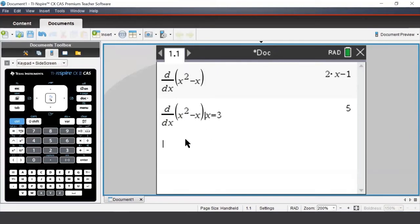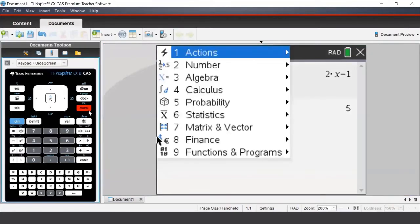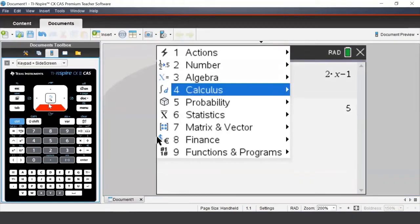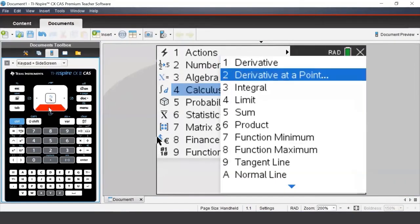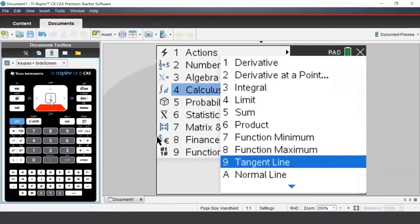The next command we'll look at is the tangent line command, which can be accessed by pressing menu, navigating to calculus, and then selecting tangent line.